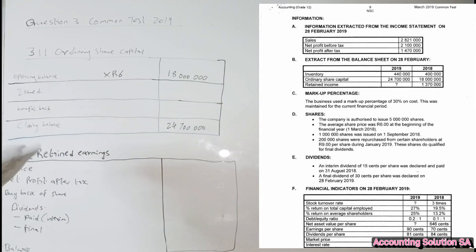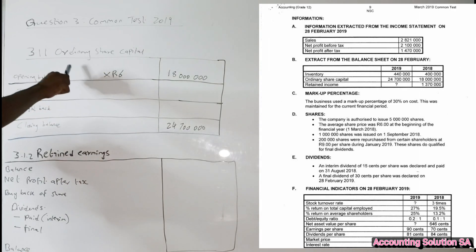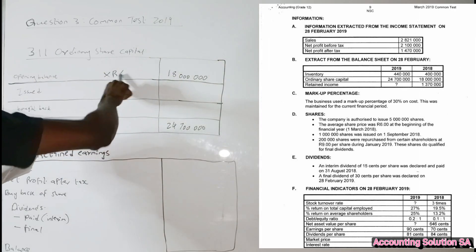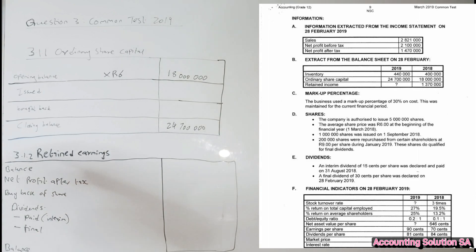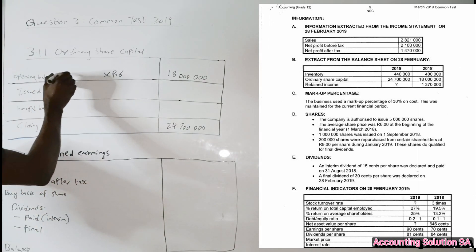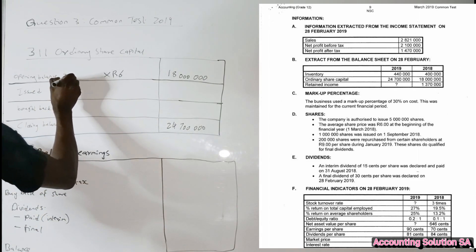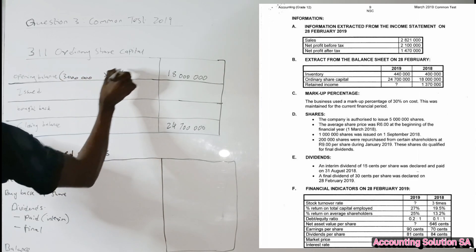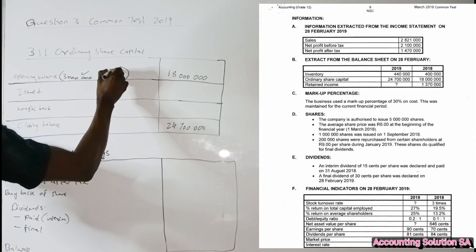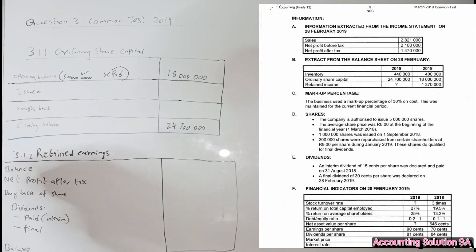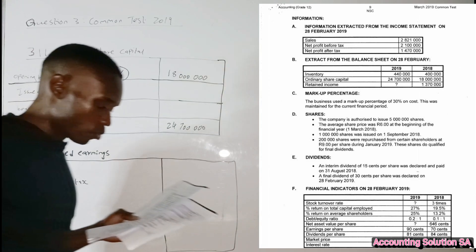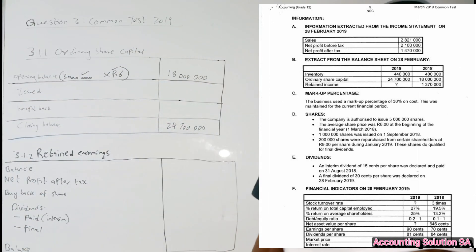How many shares at the beginning? It's very simple: 18,000,000 divided by 6 gives you 3,000,000 shares at the beginning. There are marks for this one, so make sure that you show this information before you indicate this amount.